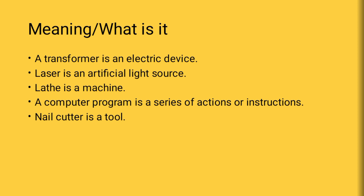Now let us see each part one by one. First, the meaning of an object. For example, a transformer is an electric device. Laser is an artificial light source. A lathe is a machine. A computer program is a series of actions or instructions — all computer programs contain some steps or instructions.